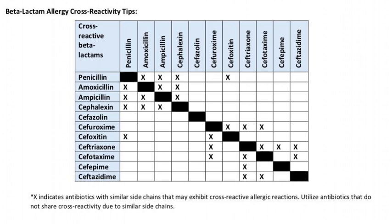If someone has a penicillin allergy, that will cross-react with amoxicillin and ampicillin. The two cephalosporins I really try to avoid are cephalexin — due to that similar side chain — and cefoxitin. Beyond that, IV cefazolin, cefuroxime, ceftriaxone (our go-to third-generation cephalosporin), cefepime, and ceftazidime really don't share that side chain and should be fine in a penicillin-allergic patient. That's key for opening up the use of cephalosporins in truly penicillin-allergic patients.